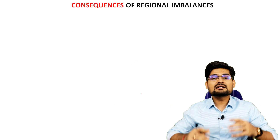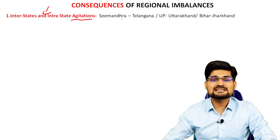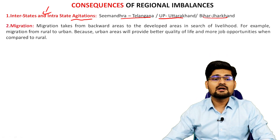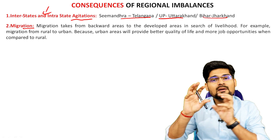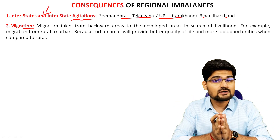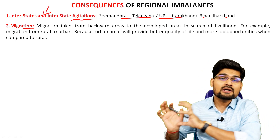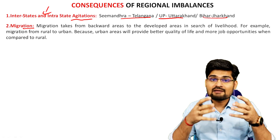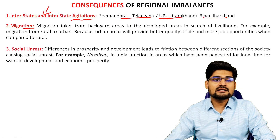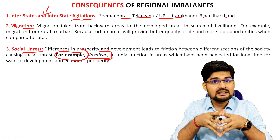There are certain consequences of regional imbalances. The first is disputes and agitations between states — for example Seemandhra-Telangana, UP-Uttarakhand, Jharkhand-Bihar divisions. Second is migration: most migration happens from backward areas to areas where developmental activities are concentrated. This imbalance leads to problems at both origin and destination. Third is social unrest — for example, the Red Corridor, Naxalism, and insurgency developing due to disparities and extreme levels of inequality.